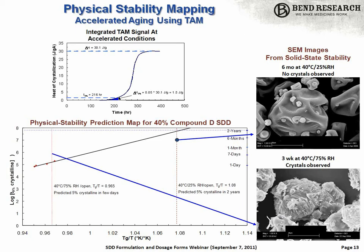In this method, you take the sample and store it at a condition typically above the glass transition temperature — so where you are in that higher-mobility, rubbery state. Knowing the Tg versus RH curve, you select conditions so that you expect crystallization at a reasonable time scale of a couple of days to weeks. You then actually measure heat flow at that condition. You pick a percent crystallinity of interest — we use the heat flow corresponding to about 5% crystallization as an indication of sufficient crystallinity to have confidence measuring it and for it to be an important change.